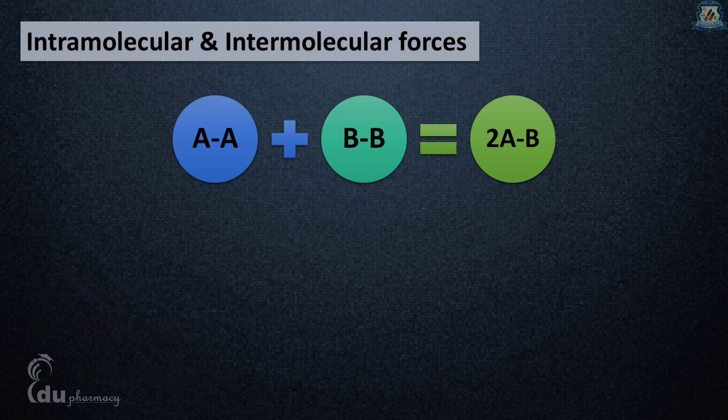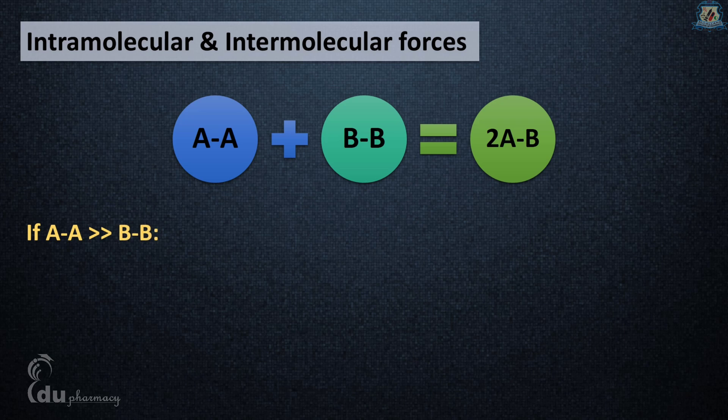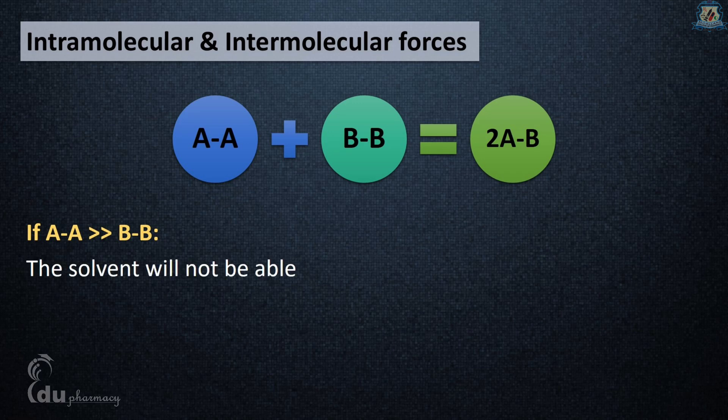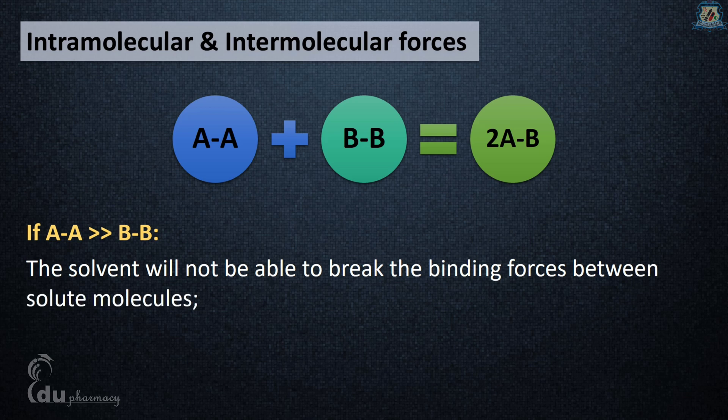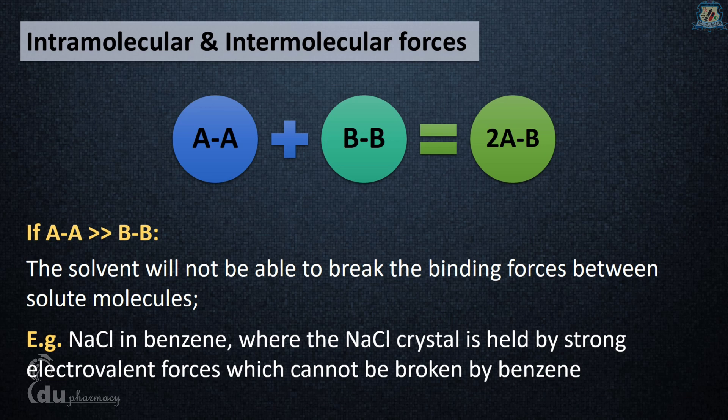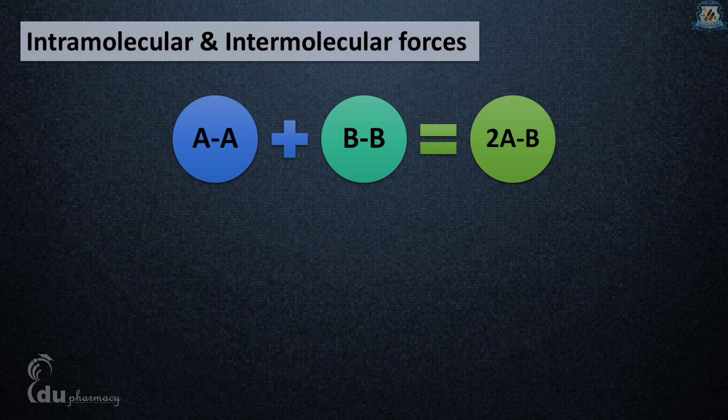One condition: if AA is greater than BB, the intramolecular force of attraction between solute is much greater than between solvent molecules. The solvent cannot break the binding forces between solute molecules. For example, sodium chloride in benzene—the sodium chloride crystal is held by strong electrovalent forces which cannot be broken by benzene, so no solvation occurs.